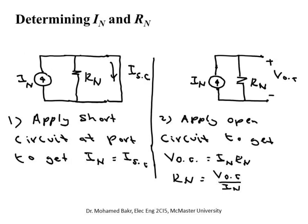Similar to the Thevenin case, we need to find I_Norton and R_Norton. The equivalent circuit has a Norton current source in parallel with the Norton resistor. If we short the output terminals — connecting them with a wire in the lab — and measure the current flowing through that short circuit, that current equals I_Norton. This is because the short circuit bypasses R_Norton, so all the Norton current flows directly in the outer loop and ignores R_N completely. To find I_Norton: create a short circuit at the port, and I_sc = I_Norton.